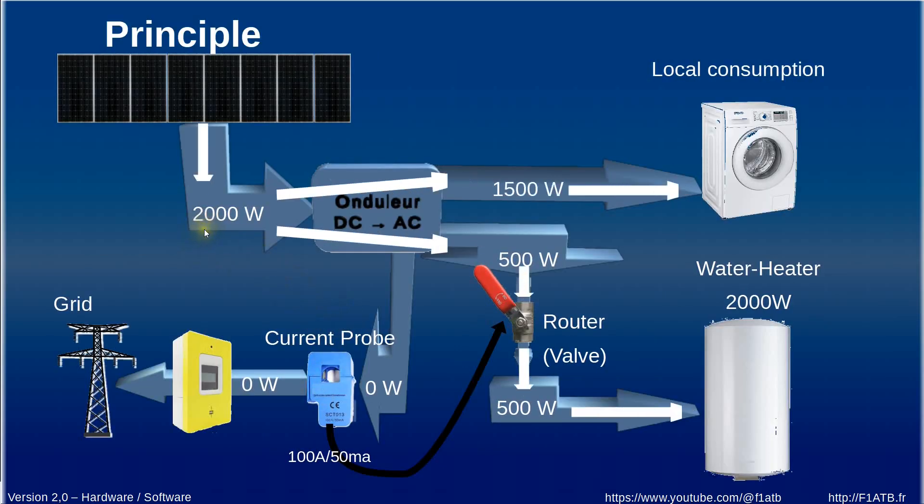Imagine we have a prediction of 2000 watts. 1500 watts are used by the local consumption and the situation what we do with the 500 remaining watts. So we have implemented a router which acts like a valve